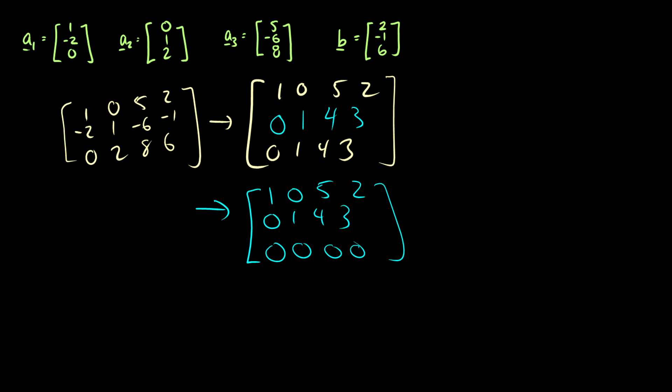So this says that x1 plus 5x3 is equal to 2 and x2 plus 4x3 is equal to 3. So again, we have this solution set: x1 is equal to 2 minus 5x3, x2 is equal to 3 minus 4x3, and x3 is free. So this is a solution set. So yeah, b can be generated with x1, x2, and x3. We have to give a certain value for x3 so we can find one solution.